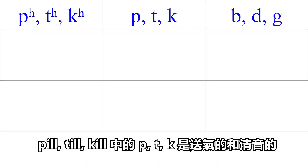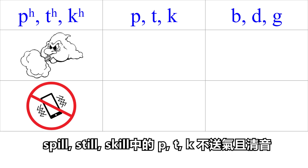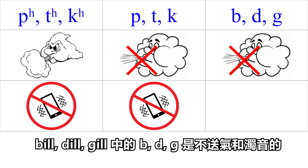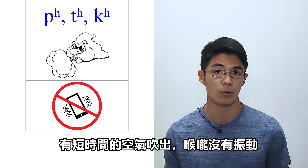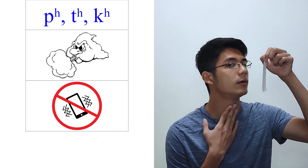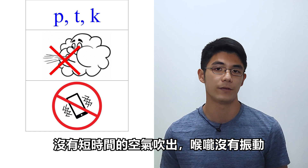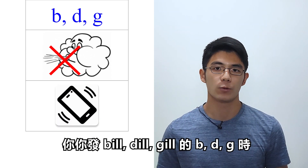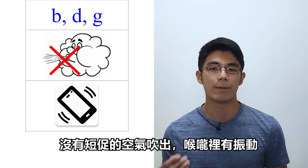The PTK as in pill, till, kill are aspirated and unvoiced. The PTK as in spill, still, skill are unaspirated and unvoiced. The BDG as in bill, dill, gill are unaspirated and voiced. This means you pronounce PTK as in pill, till, kill with a short puff of air and without vibration in your throat. You pronounce PTK as in spill, still, skill without a short puff of air and without vibration in your throat. You pronounce BDG as in bill, dill, gill without a short puff of air but with vibration in your throat.